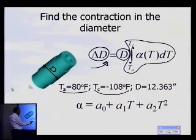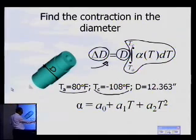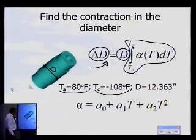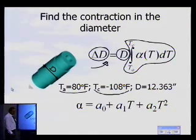This particular mixture which you are seeing here, at a temperature of minus 108 degrees Fahrenheit, is actually the temperature of a dry ice and alcohol mixture.